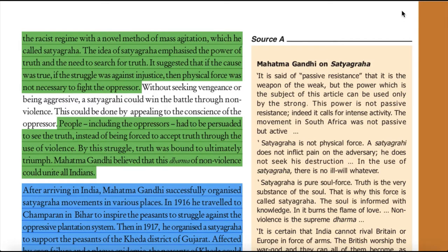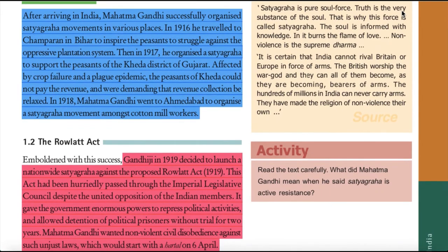Mahatma Gandhi believed that this dharma of non-violence could unite all Indians. After arriving in India, he successfully organized Satyagraha movements in various places. In 1916, he traveled to Champaran in Bihar to inspire the peasants to struggle against the oppressive plantation system. Then in 1917, he organized a Satyagraha to support the peasants of the Khera district of Gujarat, who could not pay revenue due to crop failure and a plague epidemic. In 1918, Mahatma Gandhi went to Ahmedabad to organize a Satyagraha movement amongst cotton mill workers.